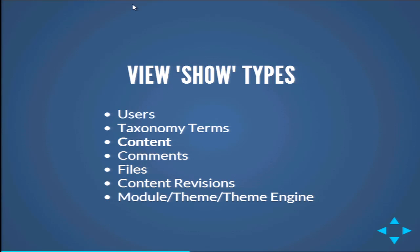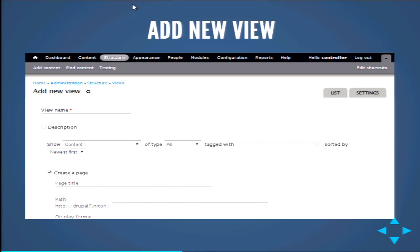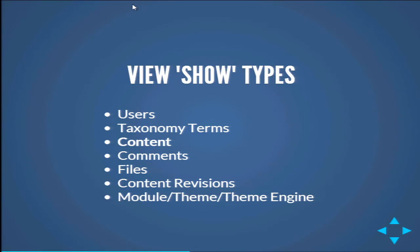You also have to select the view show type. You'll notice there's a big 'Show' menu that says 'Show: Content.' Content is just one of the types. You can also show users, taxonomy terms, content, comments, files, content revisions, and a whole bunch of other stuff. Ninety-five percent of the time you will always select content — all the other stuff gets a lot more advanced really quickly.